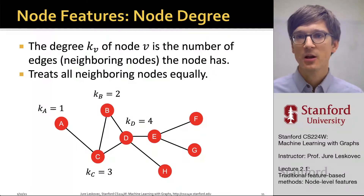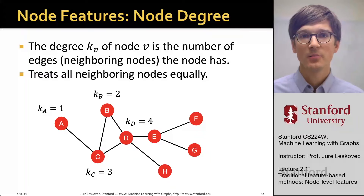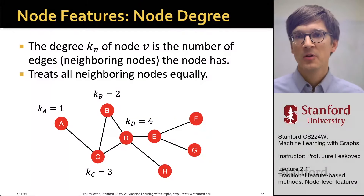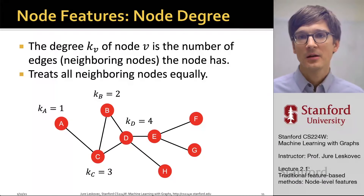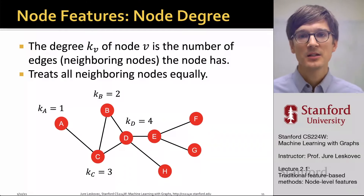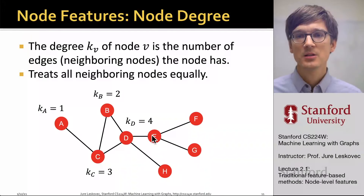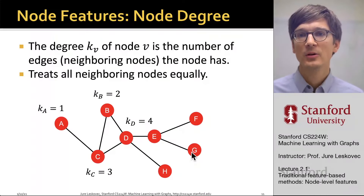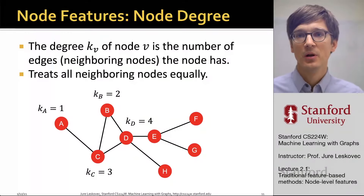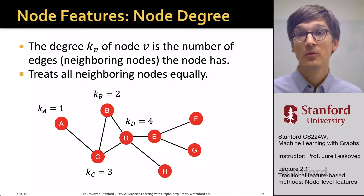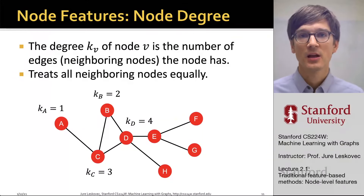Let's talk about node degree. It is a very useful feature where we capture the structure of node V in the network with the number of edges that this node has. The drawback is that it treats all neighbors equally, so nodes with the same degree are indistinguishable even though they may be in different parts of the network. For example, nodes C and E have the same degree, and nodes A, H, E, F, and G all have degree one — so they will all have the same feature value, forcing the model to predict the same value for all of them.